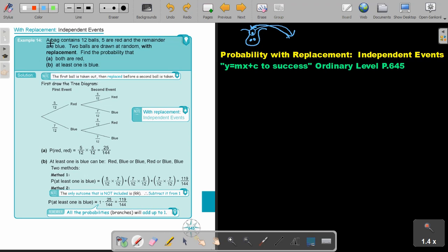Let's look at an example. A bag contains 12 balls. Five are red and the remainder are blue. Two balls are drawn at random with replacement. Find the probability that both are red.